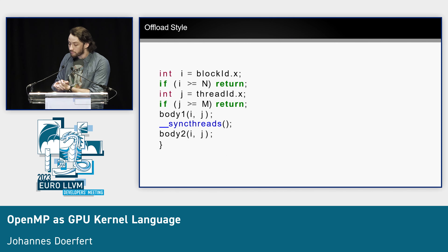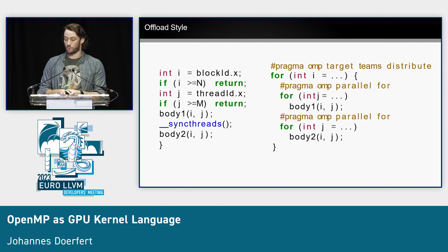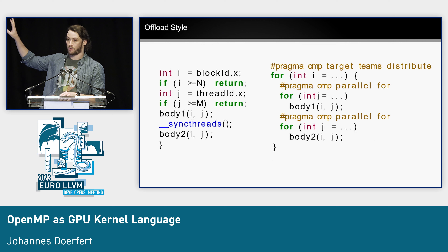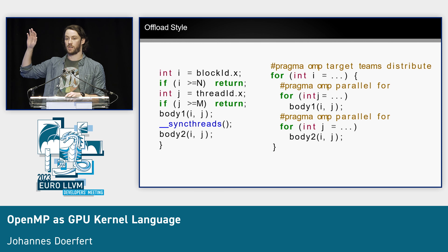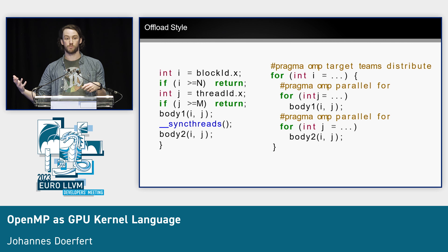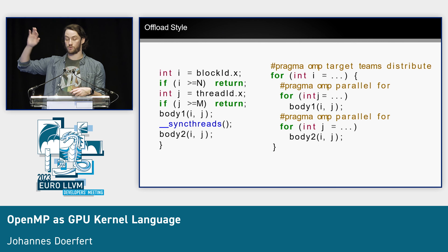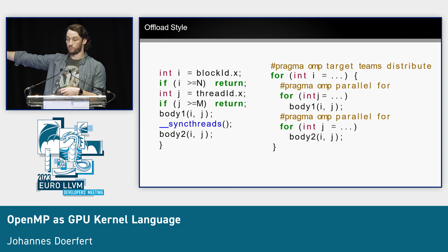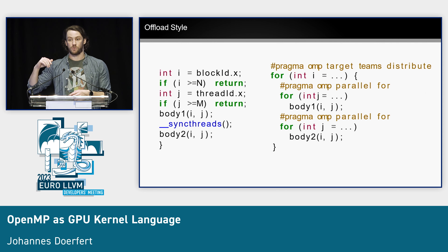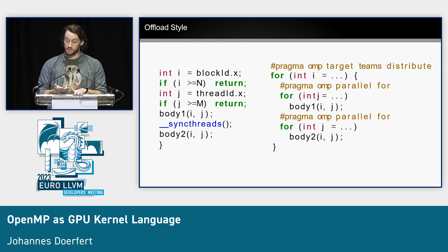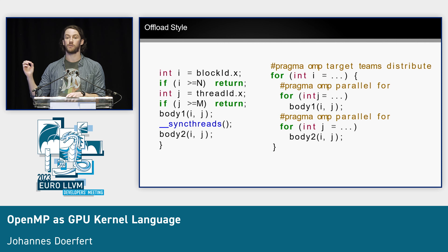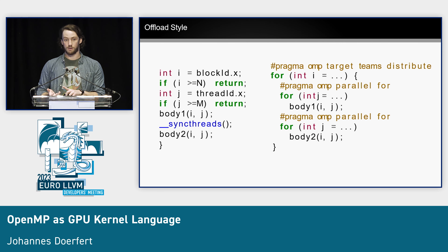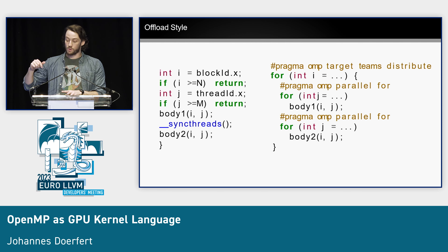If you look at OpenMP offload, it looks more like this — you have the classical loops, and OpenMP offload just says: on the classical OpenMP parallelization of loops, we tag this target thing, that means it goes to the device. So you have this loop-style coding, which looks similar but arguably different. And that difference has two consequences: one is it actually makes the code slower, because these loops are inherently slower — they have back edges, and because they have back edges, we have to save registers, and registers are precious.